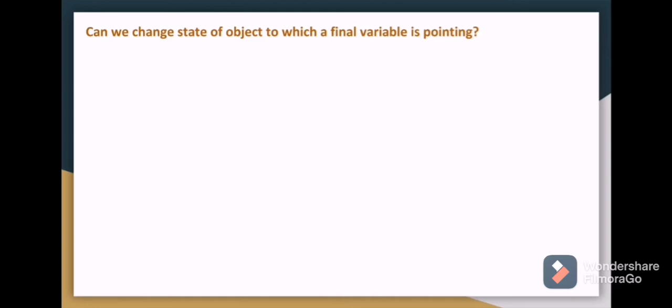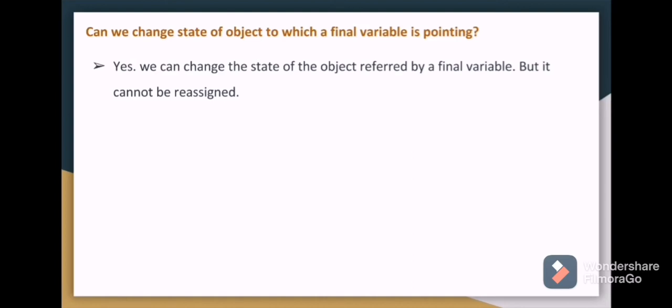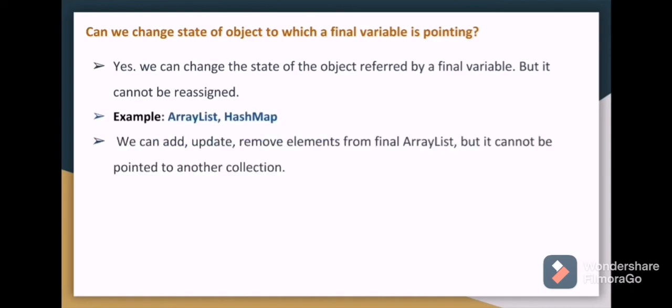Can we change the state of object to which your final variable is pointing? Yes, we can change the state of object referred by a final variable but it cannot be reassigned. Example: ArrayList, HashMap - we can add, update or remove elements from this final ArrayList but it cannot be pointed to another collection.